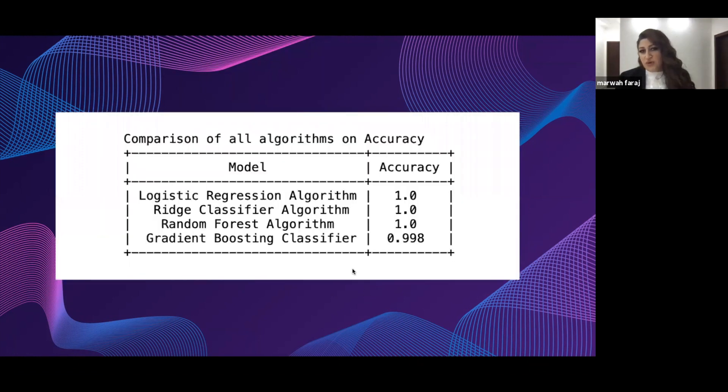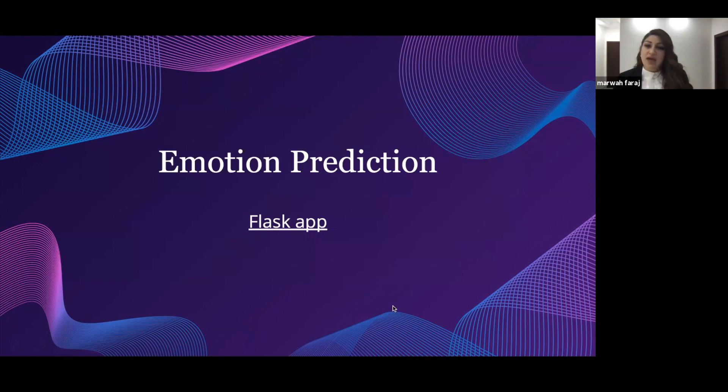Three of them gave me 100% accuracy, and the gradient boosting classifier gives me 0.99. I deployed it through a Flask application, but I couldn't share it because I'm using the webcam to share through Zoom. So I recorded a video. Let's watch it.